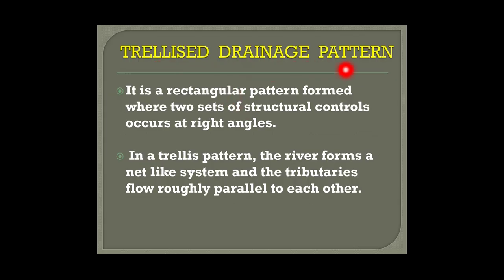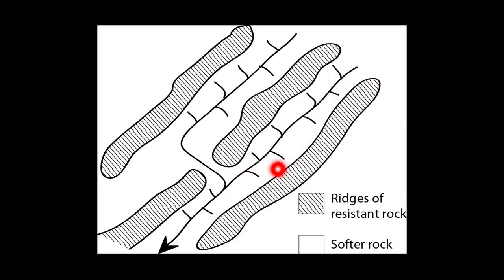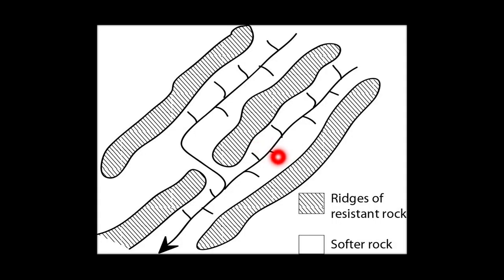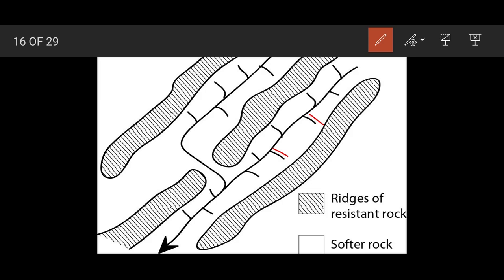The next is the trellis drainage pattern — a rectangular pattern formed where two sets of structural controls occur at right angles. Hard resistant rocks alternate with soft rocks; the soft rocks have been eroded and the tributaries join the main river at almost 90 degrees. In a trellis pattern the river forms a net-like system and the tributaries flow roughly parallel to each other.